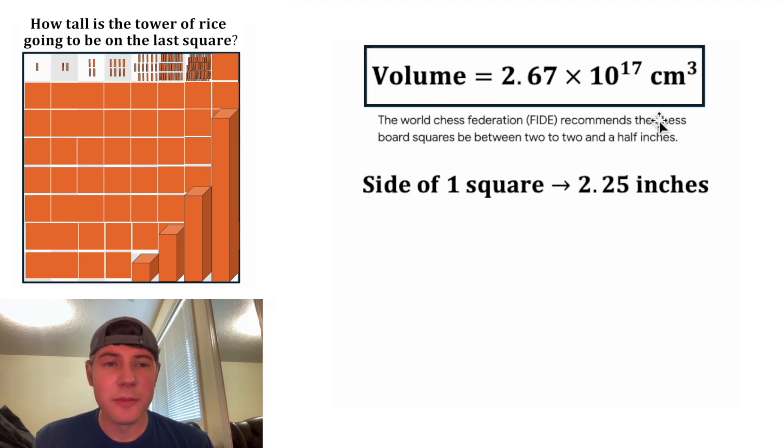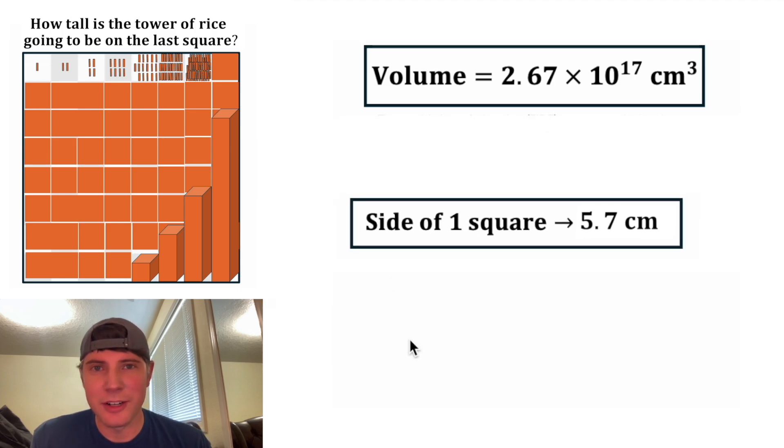And then since our volume is in centimeters, let's change this inches into centimeters. There are 2.54 centimeters in each inch. So we're going to multiply our 2.25 inches by this conversion and figure out what that's equal to. The inch on top and bottom will cancel each other out. So all we need to do is multiply 2.25 times 2.54, and that gives us 5.7. So the length of a side of a single square on our chessboard is 5.7 centimeters. This also looks important. Let's put a box around it.